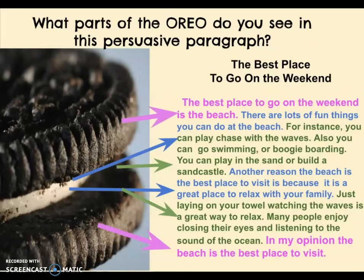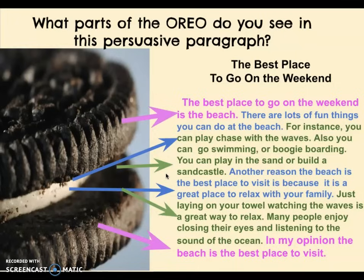I'm going to read this opinion paragraph to you. You can see it's color coded, and I want you to see if you can identify what parts of the Oreo you are seeing or listening to in this persuasive paragraph. It's called 'The Best Place to Go on the Weekend.' The best place to go on the weekend is the beach. There are lots of fun things you can do at the beach. For instance, you can play chase with the waves, go swimming or boogie boarding, or play in the sand or build a sand castle. Another reason the beach is the best place to visit is because it is a great place to relax with your family. Just laying on your towel watching the waves is a great way to relax. Many people enjoy closing their eyes and listening to the sound of the ocean. In my opinion, the beach is the best place to visit.